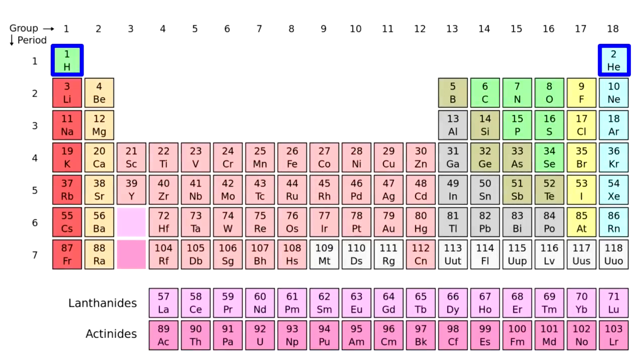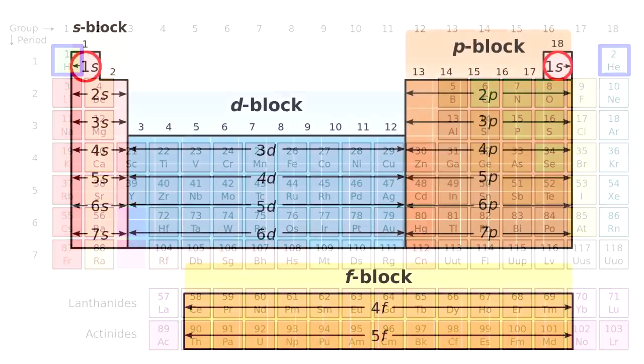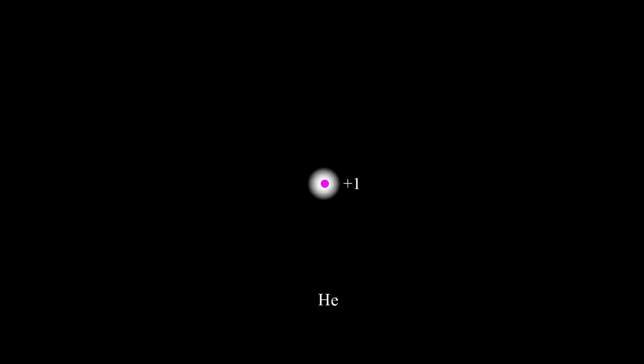We have now completed the first period of elements, and according to our bookkeeping it seems filled up the 1s orbital. Adding another proton to the nucleus, along with one or two neutrons, again leaves us with a net charge of plus one.